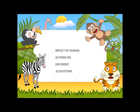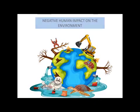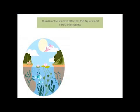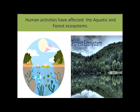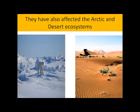Hello children, today you are going to learn about the impact of human actions on different ecosystems. Let's see the negative human impact on the environment. Human activities have affected the aquatic and forest ecosystems. They have also affected the Arctic and desert ecosystems.